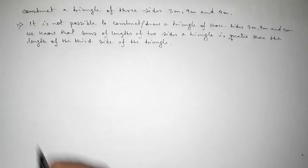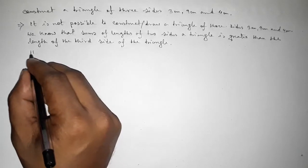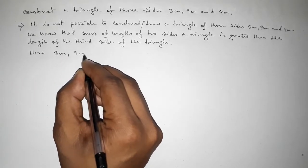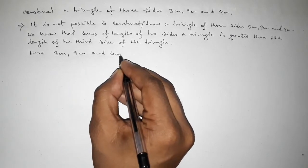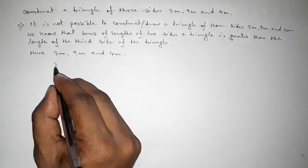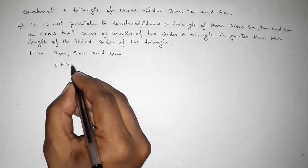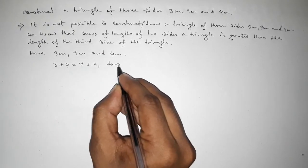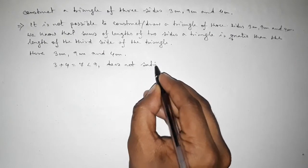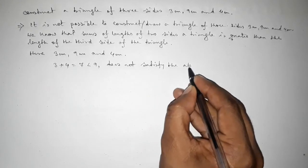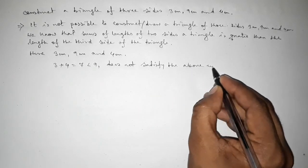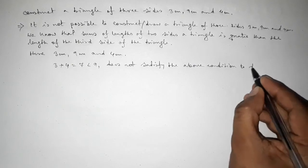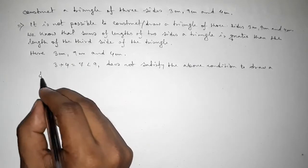The three given sides are three centimeter, nine centimeter, and four centimeter. Adding three plus four equals seven, which is less than nine. So it does not satisfy the above condition to construct or draw a triangle using these three sides.